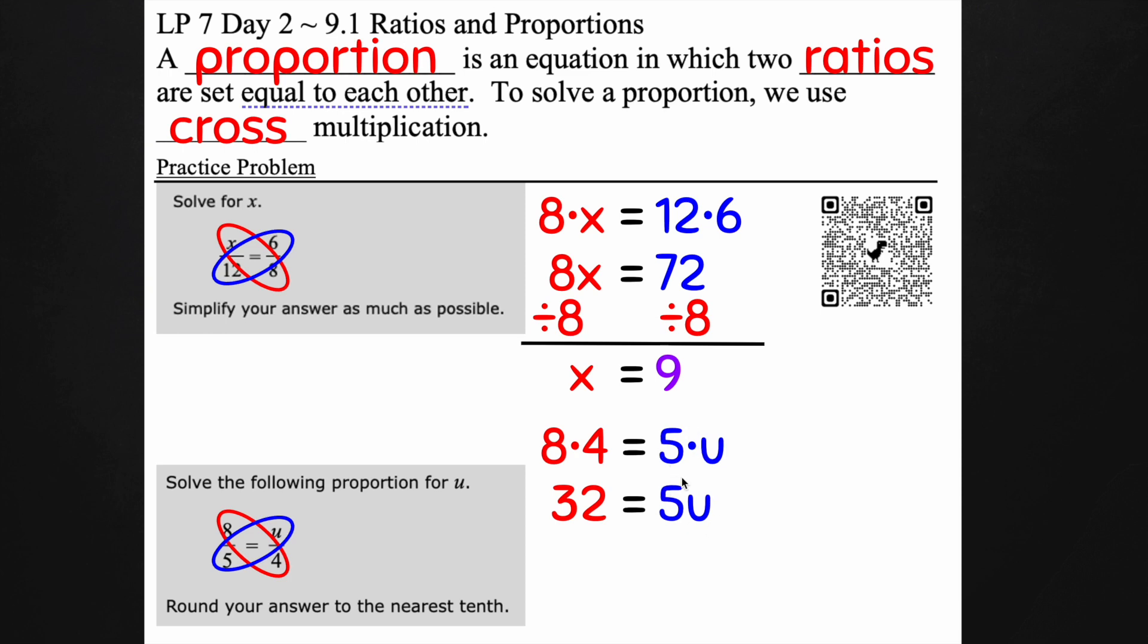Then I'm going to undo the multiplication here. I don't want to know what 5u is, I want to know what just u is. So I'm going to divide by 5 on both sides. 32 divided by 5 is not going to be a whole number.